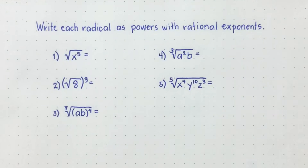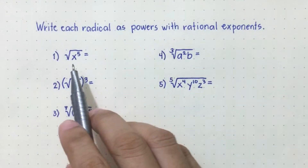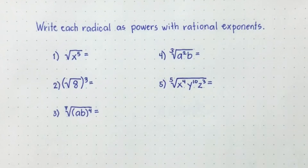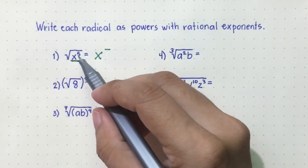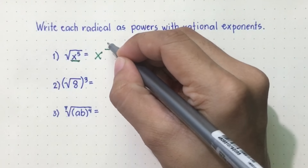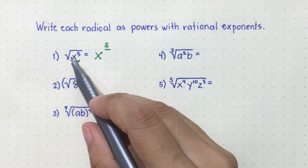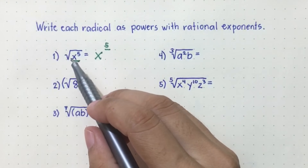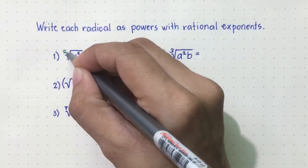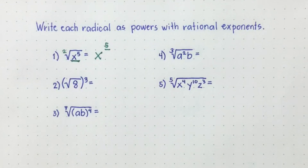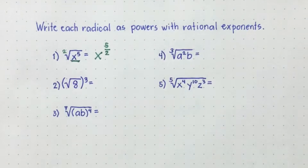Let's have these examples. Write each radical as powers with rational exponents. For example, we have the square root of x raised to five. This radicand x will be the base. The exponent five will be the numerator of the rational exponent. And for the denominator, it will come from the index. But as you can see, it has no index. So in a radical expression, if you cannot see the index, automatically that is two, because this radical sign is read as square root of. So the index will be two, and therefore the denominator of the rational exponent is two.